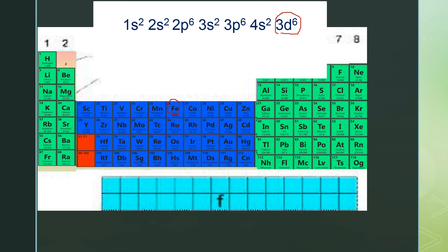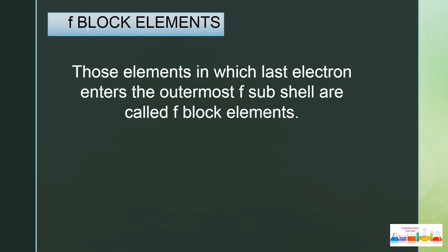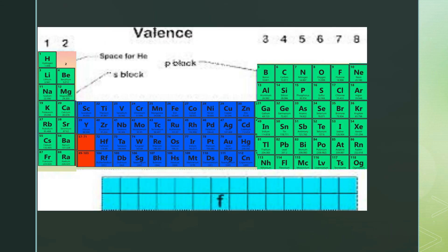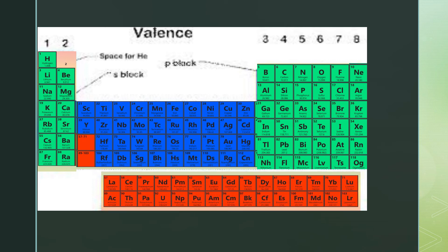We can do the same for the rest of the elements, but in this video I just want to show you the position of the D block elements in the periodic table. F block elements are those elements in which the last electron enters the outermost F subshell. The lanthanide series and actinide series are known as F block elements in the periodic table.